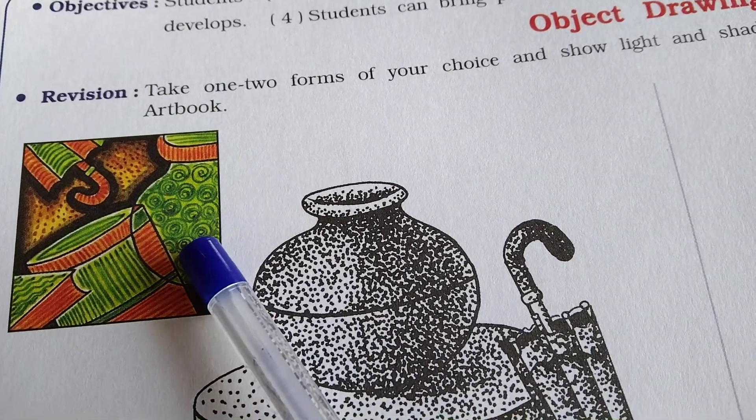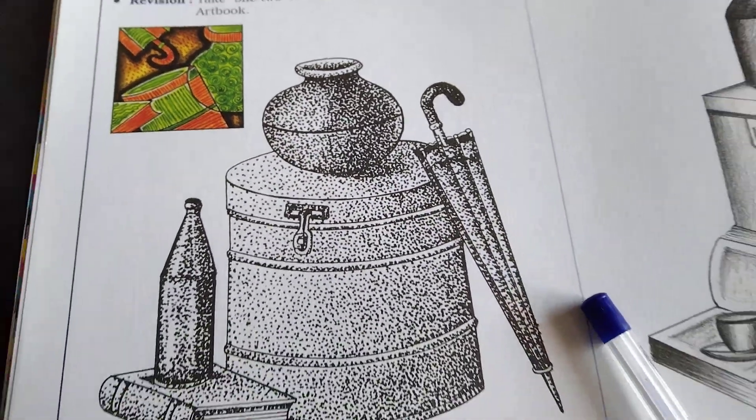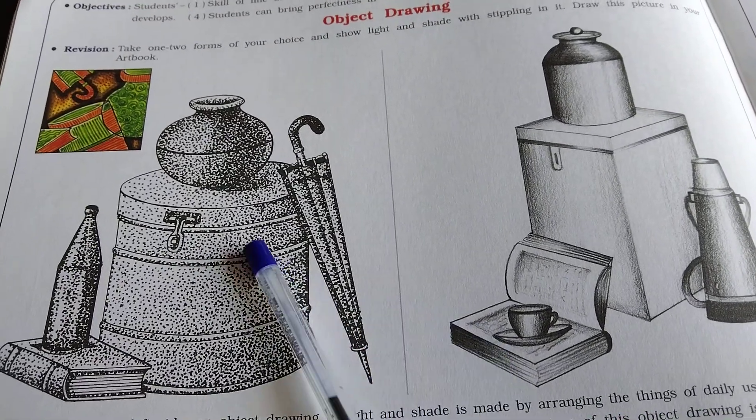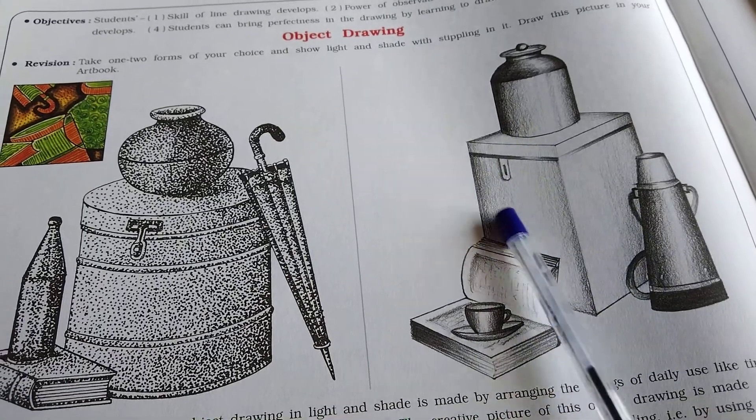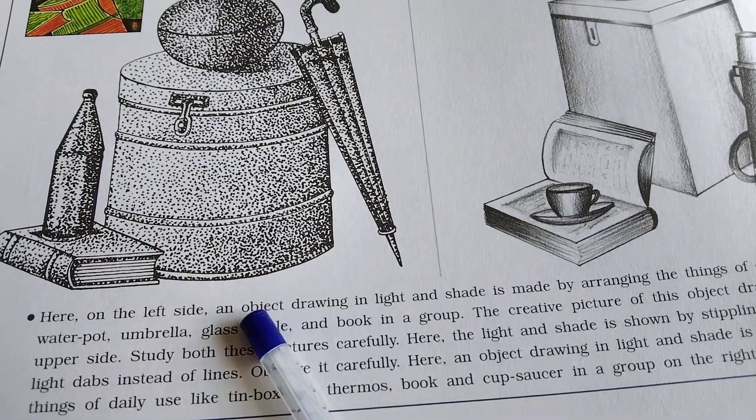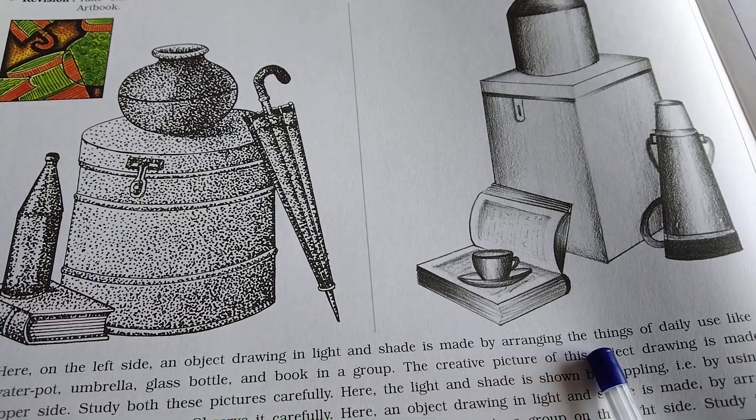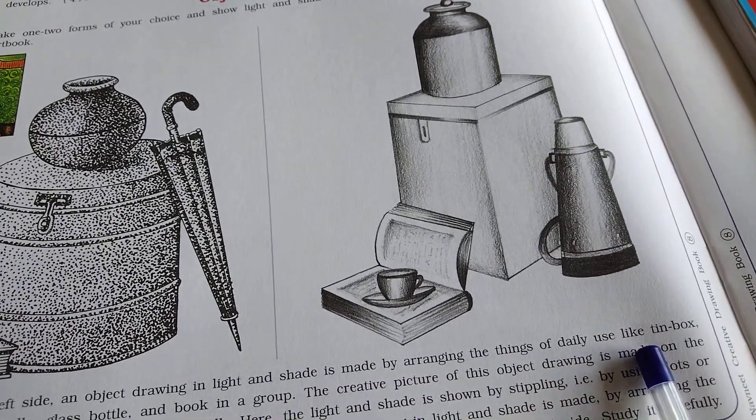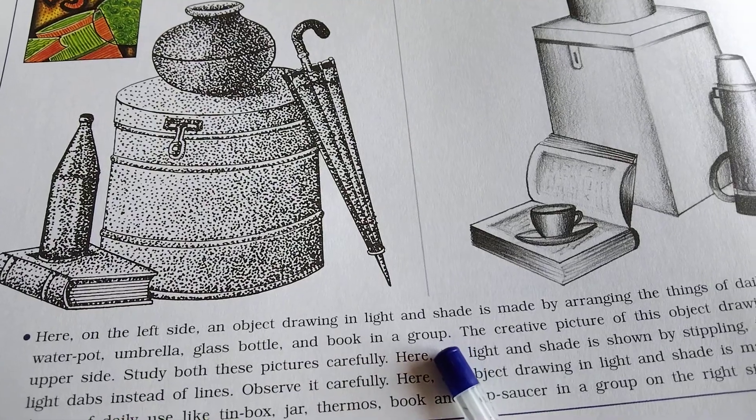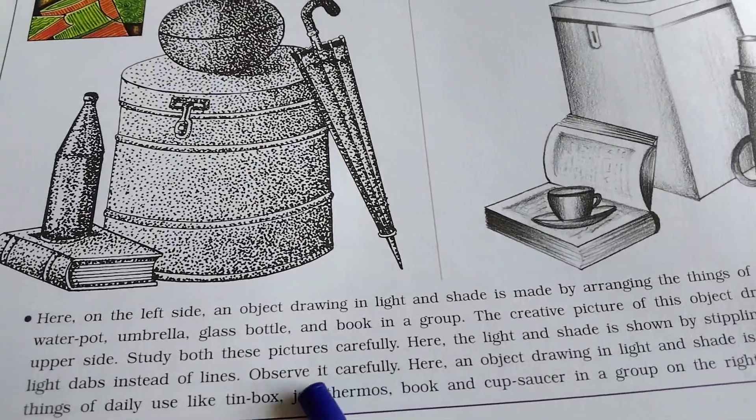You have to draw this picture in art book. On the left side, an object drawing in light and shade is made by arranging things of daily use like this box, water pot, umbrella, glass bottle, and book in a group. The creative pictures of this object drawing are made on the upper side.